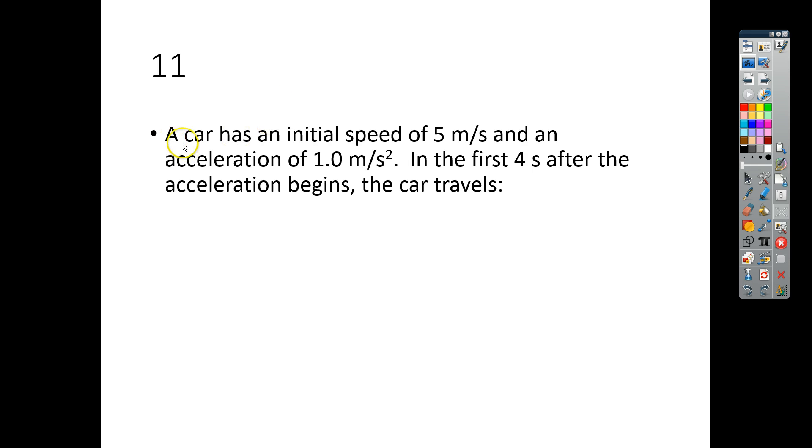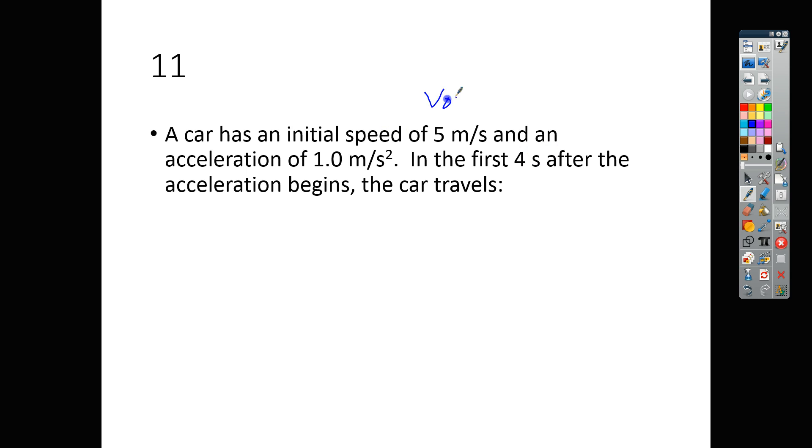For the first one, it says the car has an initial speed of 5 meters per second, so that's our V0, and an acceleration of 1. Notice that it is positive. In the first 4 seconds, so that's our time after the acceleration begins, the car travels and it wants to know what is the distance that it travels.